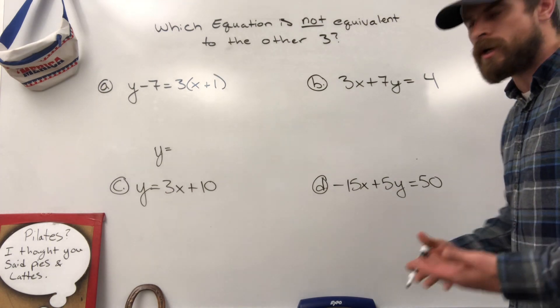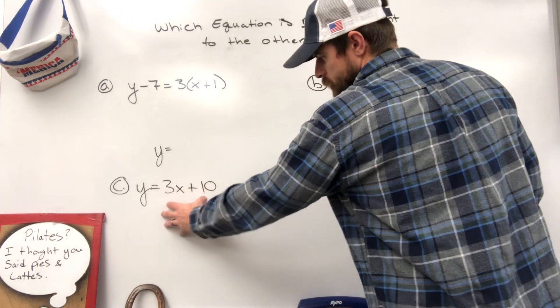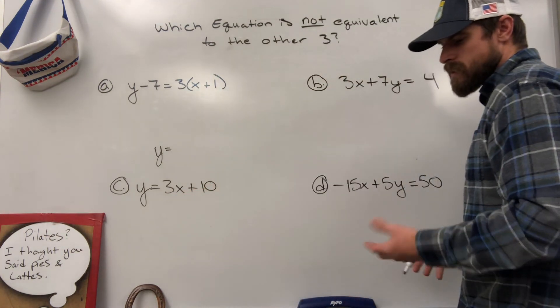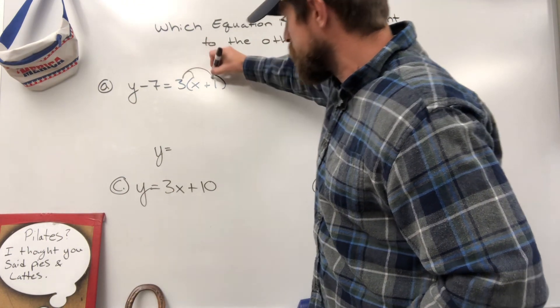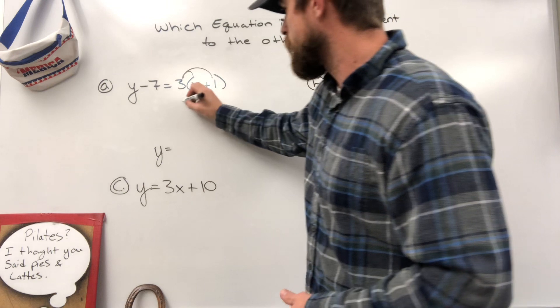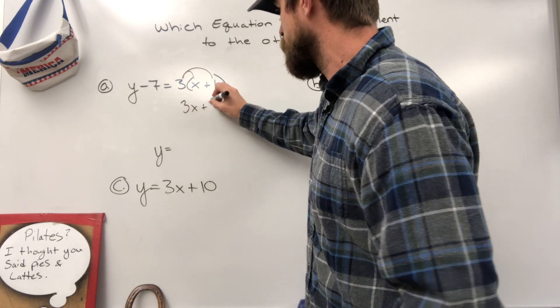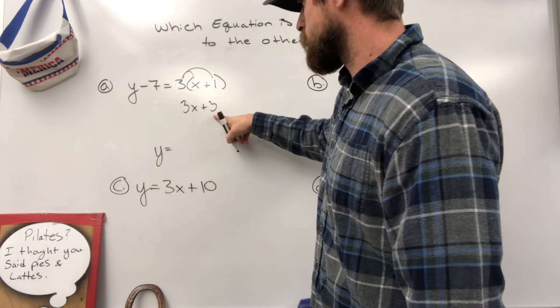We're just going to rearrange the ones that we want to. I always like to go in slope intercept form. It seems to be one of the easiest ones to convert to. So here we go. 3 times x, 3 times 1, we need to distribute. That's going to give me 3x plus 3, because 3 times 1 makes 3.